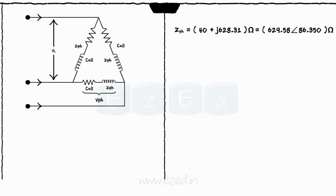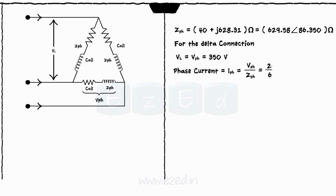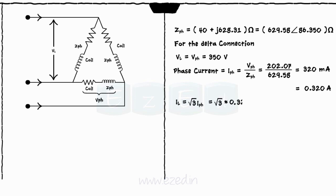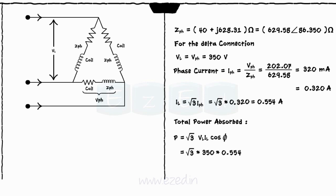For the delta connected system, Zph remains the same. For delta connection, VL = Vph = 350 volts and Iph = Vph / Zph = 320 milliamperes. IL = √3·Iph = 554 milliamperes. The total power consumed P = √3·VL·IL·cosφ = 21.39 watts.